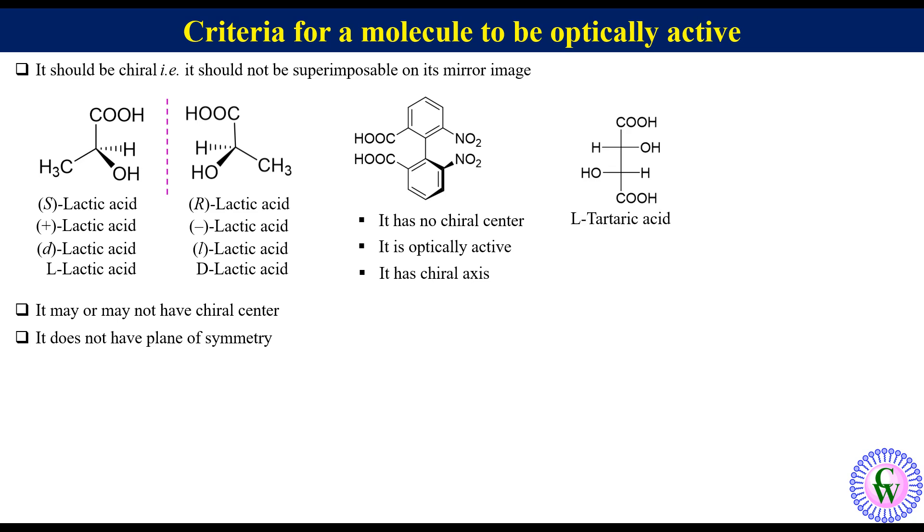For example, L-tartaric acid and meso-tartaric acid both have two chiral centers, but L-tartaric acid is optically active because it has two chiral centers and doesn't have any plane of symmetry, while meso-tartaric acid is optically inactive as it has a plane of symmetry that makes it achiral.